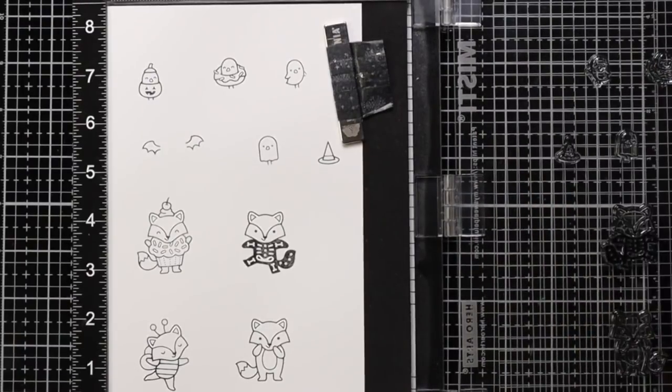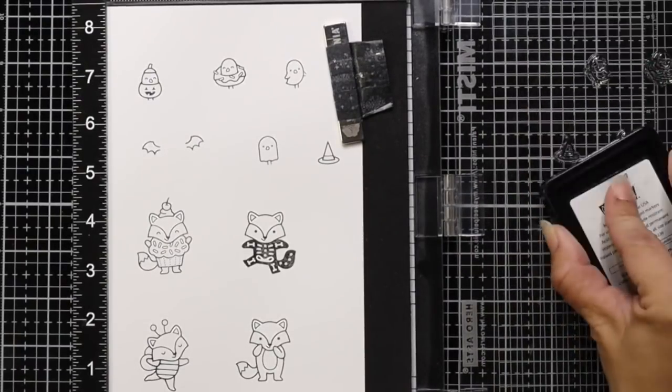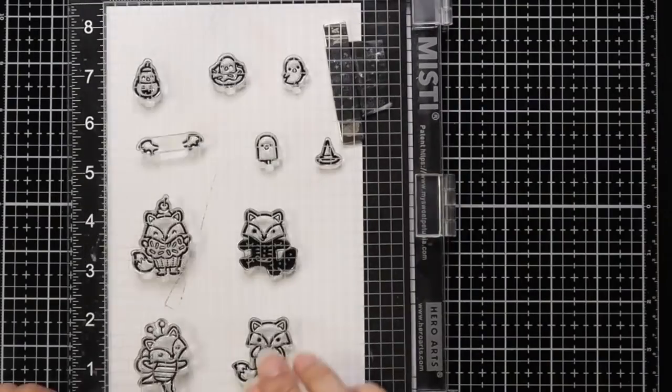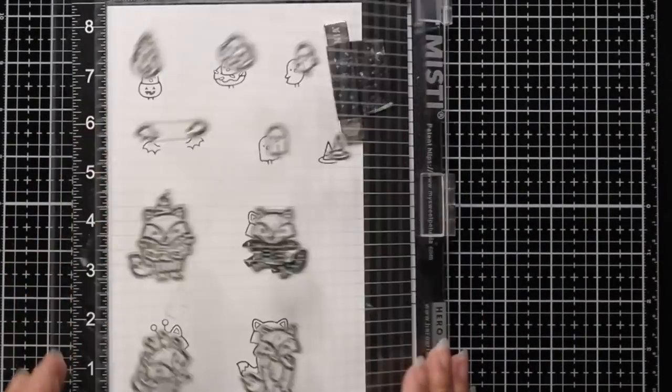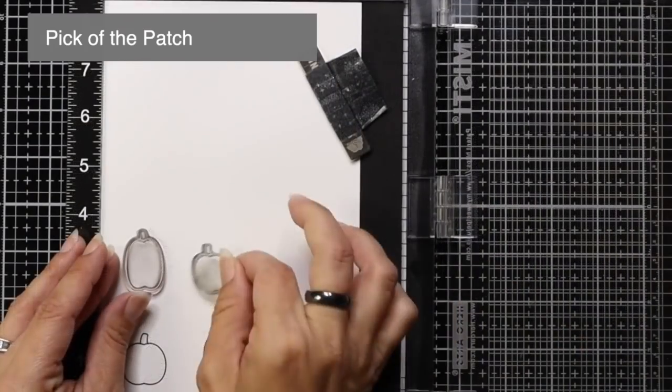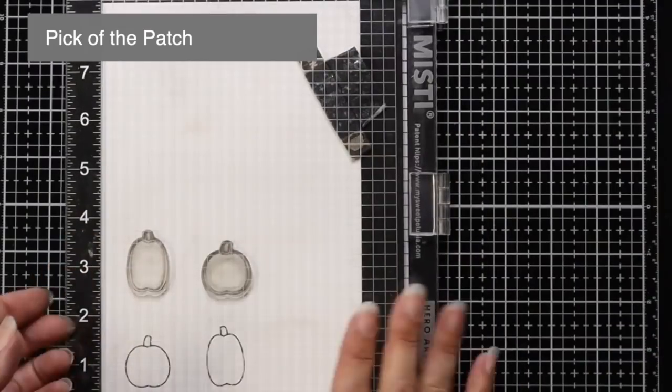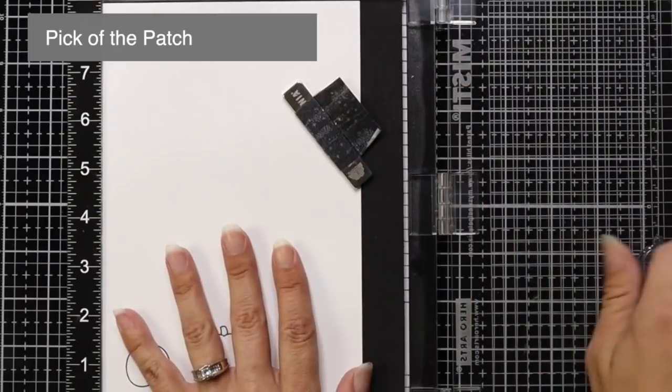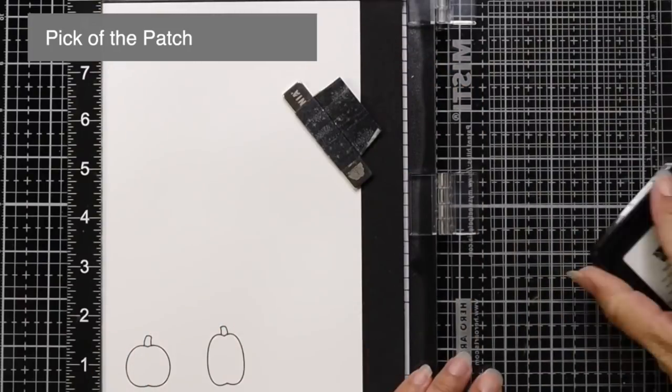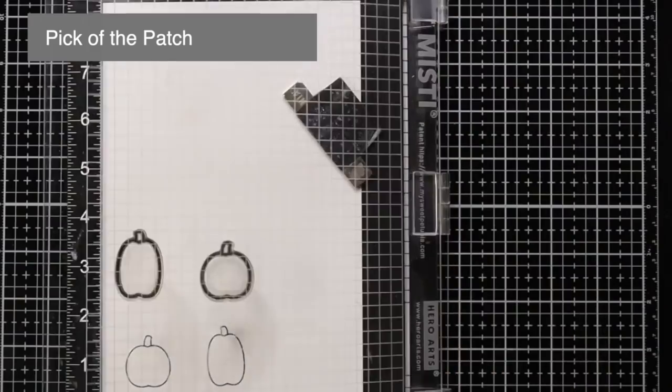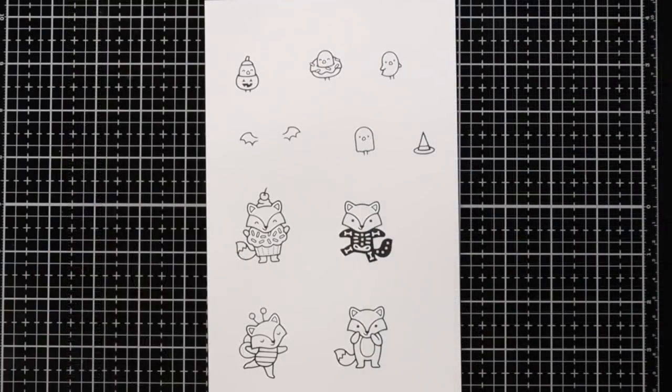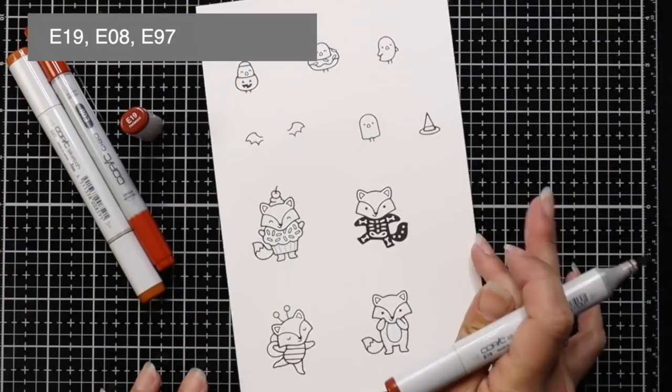Now I wanted to make sure I had a really good impression since I do have a lot of them on here, so I'm going to ink this up one more time. Now I'm also going to bring in some pumpkins from Pick of the Patch, so I'm going to use four pumpkins and stamp those as well. Now I can work on the Copic coloring.